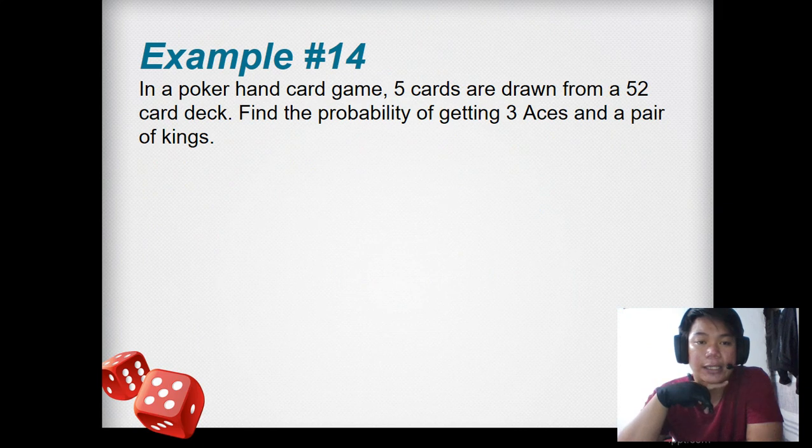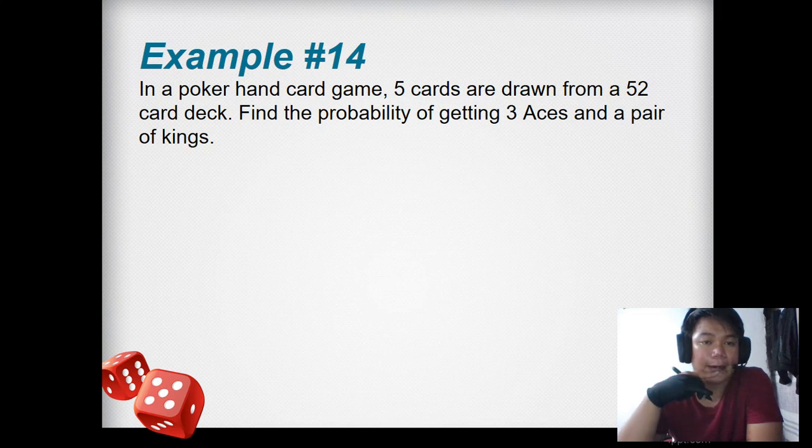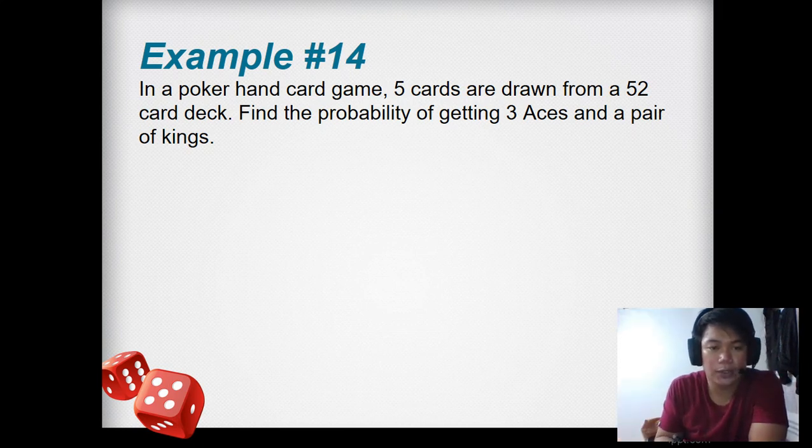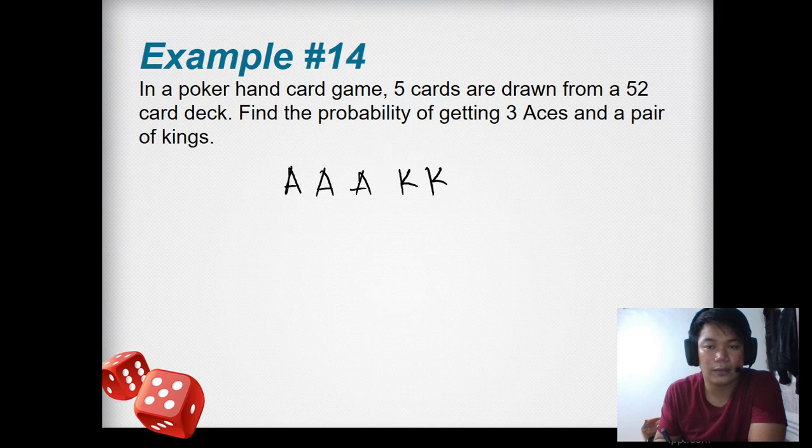Here's the example of hypergeometric. In a poker hand card game, 5 cards are drawn from a 52-card deck. Find the probability of getting 3 aces and a pair of kings. Take note: 3 aces - A, A, A, and then king, king. This is our target.